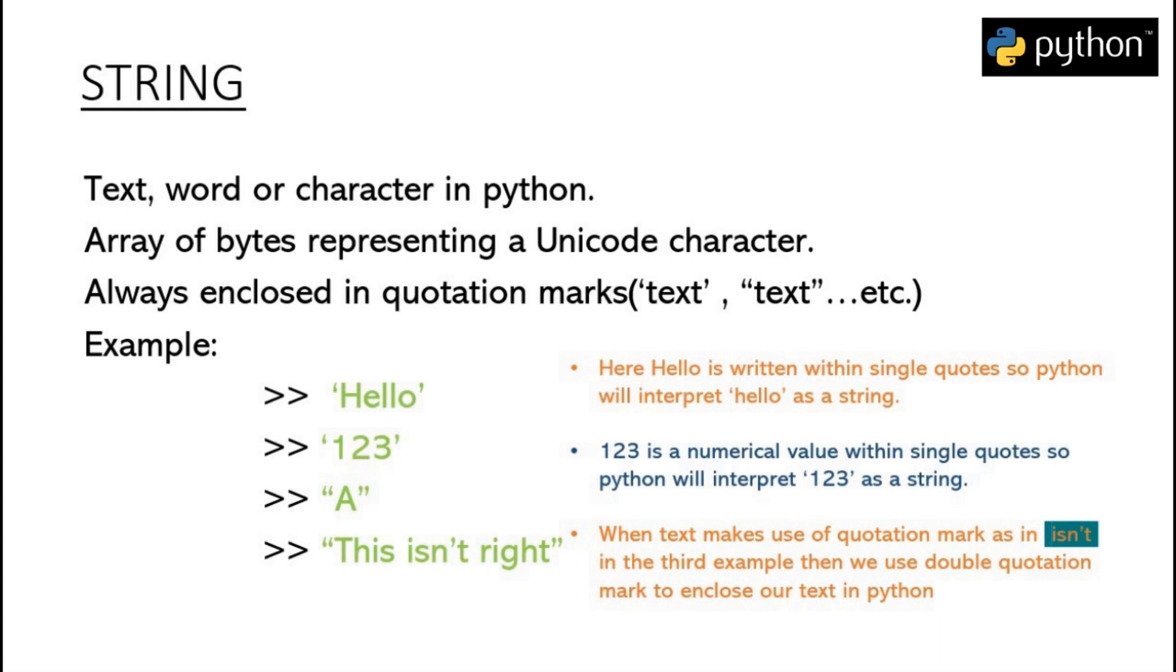For example, here we have a string hello. Now hello is made up of 5 different characters namely h-e-l-l-o. So we will say that hello is a sequence of different characters and since it is enclosed within single quotes, so we will say that hello is a Python string.